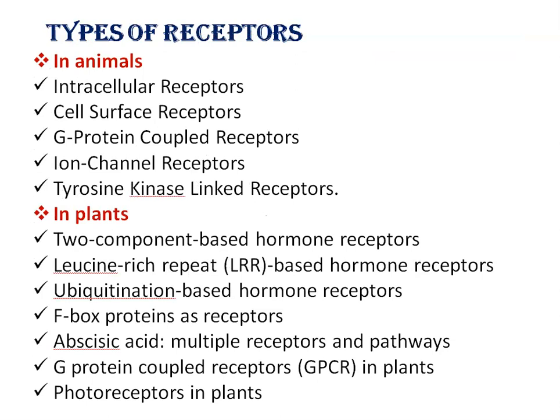Now, different types of receptors in plants and animals. Receptors are specialized sensor proteins located on the plasma membrane, cytoplasm, endomembrane system, or in the nucleus. In animals, receptors include intracellular receptors, cell surface receptors, G protein coupled receptors, ion channel receptors, and tyrosine kinase linked receptors. While in plants, two-component based or hormone receptors, leucine-rich repeat (LRR) based hormone receptors, ubiquitination-based hormone receptors, F-box proteins, abscisic acid receptors, G protein coupled receptors, and photoreceptors.